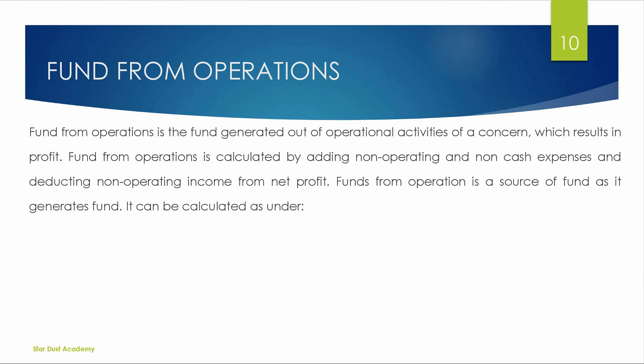Fund from operation is the fund generated out of the operational activities of a concern which results in profit. For operational activities, fund from operation is calculated by adding non-operating and non-cash expenses and deducting non-operating income from net profit. If we calculate the net profit, then we make adjustments to arrive at fund from operation.